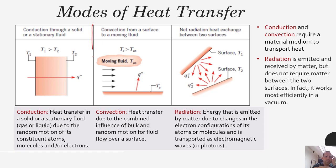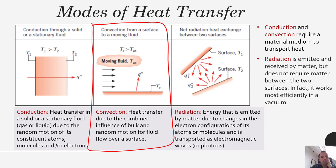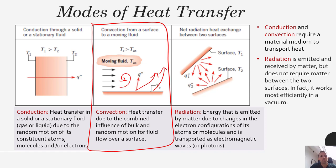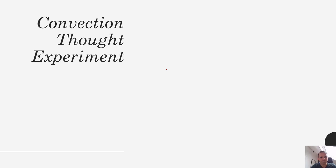Convection is heat transfer due to the combined influence of bulk and random motion for fluid flow over a surface. When you have a surface giving off heat into a fluid, that is convection. The difference between convection and conduction is that convection has a moving fluid that can circulate and carry heat away by bulk fluid motion. In conduction, which typically happens in a solid, all the molecules or atoms are bound — they can only transfer energy by random motion, whereas in convection, energy can be transferred by bulk fluid currents that sweep away heat.